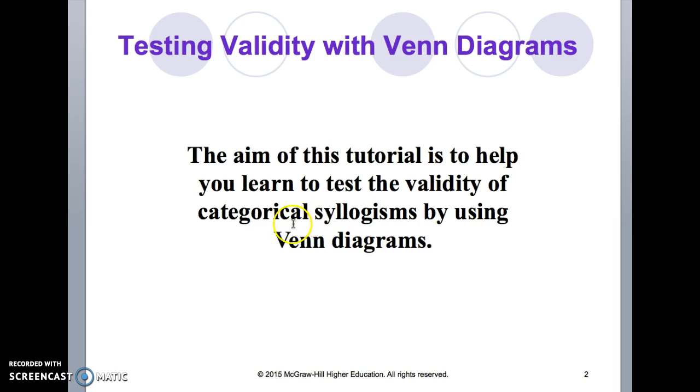I want to move beyond that today by talking about how we can use these Venn diagrams to determine if the categorical syllogism is indeed valid or not.